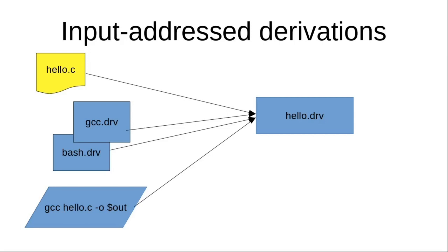For input addressed derivations, what happens is that each derivation like hello.drv has a bunch of inputs, be they files or other derivations or strings in the derivation, including the build command itself or the environment variables that are going to be available in the build environment.